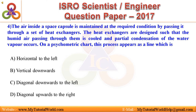Question 4. The air inside a space capsule is maintained at the required condition by passing it through a set of heat exchangers. The heat exchangers are designed such that the humid air passing through them is cooled and partial condensation of the water vapor occurs. On a psychrometric chart, this process appears as a line which is: A. Horizontal to the left. B. Vertical downwards. C. Diagonal downwards to the left. D. Diagonal upwards to the right. Answer is: Diagonal downwards to the left.